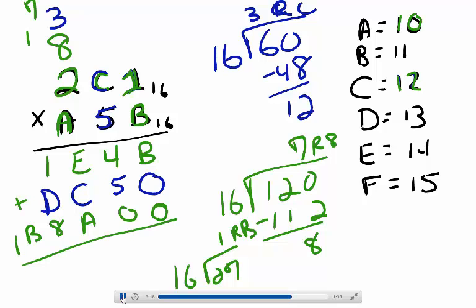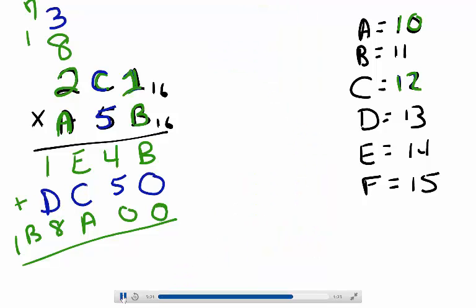Now I add my rows. B plus 0 plus 0 equals B. 4 plus 5 plus 0 equals 9.